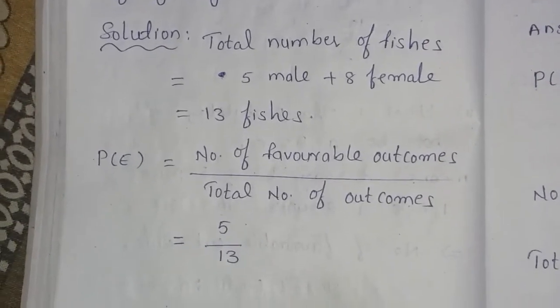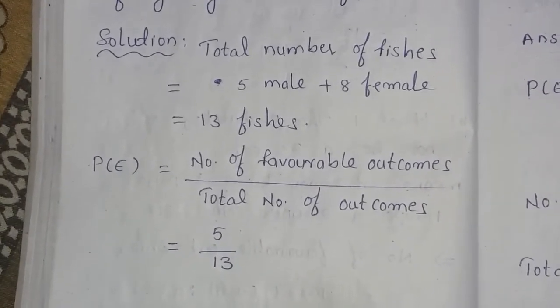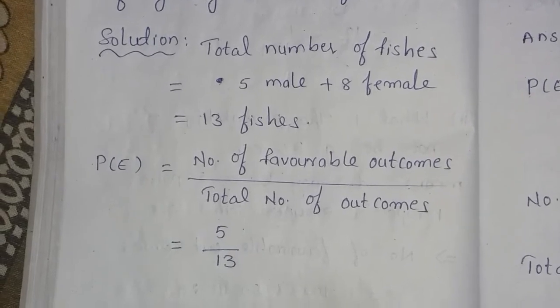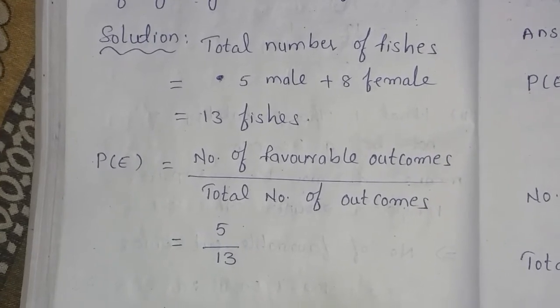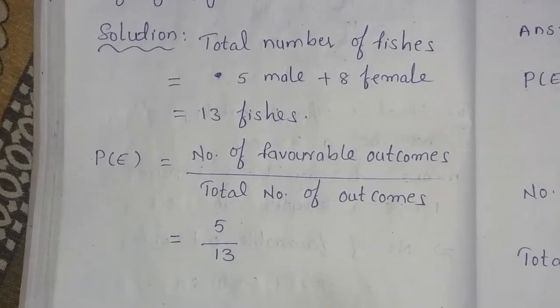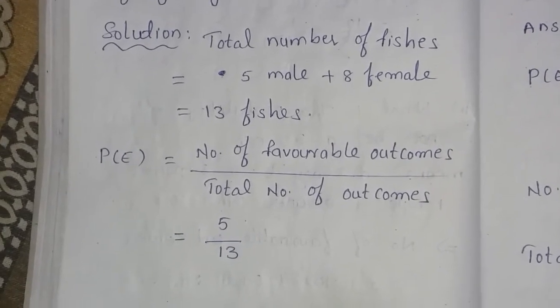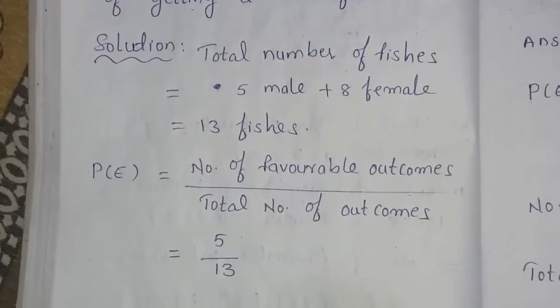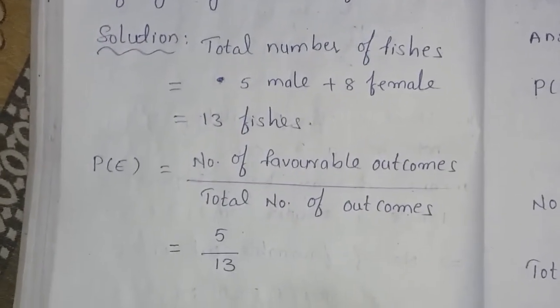The number of favorable outcomes to pick up a male fish is 5. Total number of outcomes are 13. So the answer is 5 by 13.